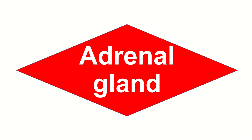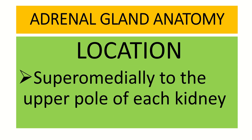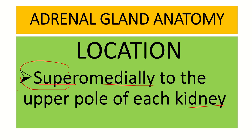Welcome to another lecture. Today our topic is the adrenal glands. First, let's look at the location. The adrenal gland is located superomedially to the upper pole of the kidney — that means the adrenal gland lies at the upper part and medial part of the kidney.